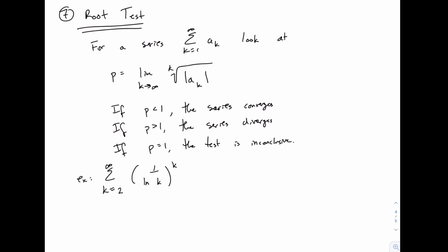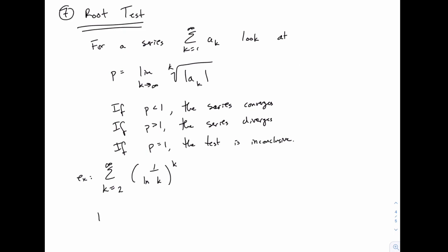So I'll show you one example here, and this really just applies when you have some expression like this raised to the power of k, because then p starts by taking away that power, and we just wind up with the limit of 1 over ln of k with the absolute value. And that is pretty simple,